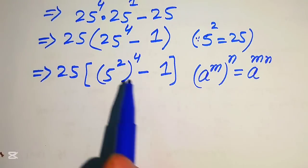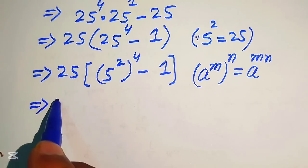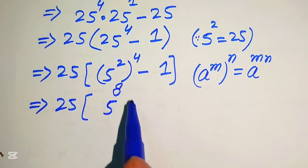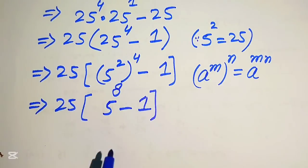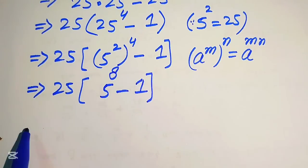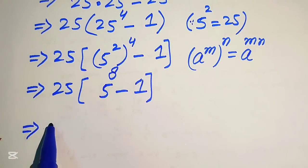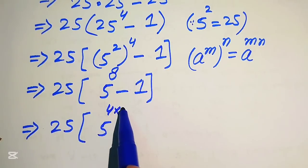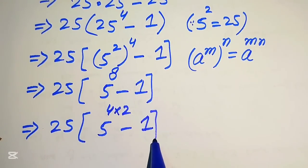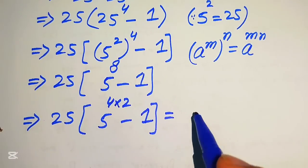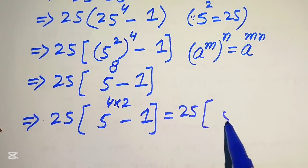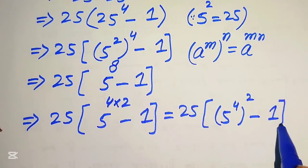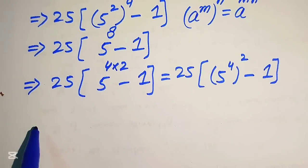According to this exponent law, we multiply the two exponents. It is written as 25 times 5 to the power of 2 times 4, which is 8, minus 1. We then rewrite exponent 8 as 4 multiplied by 2, giving us 25 into 5 to the power of 4, whole squared, minus 1. First we need to find the value of 5 to the power of 4.